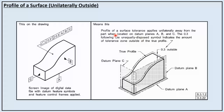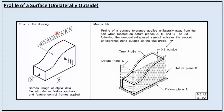Coming to profile of a surface unilaterally outside: in this example the feature control frame shows profile of a surface with a geometrical tolerance of 0.3, which is unilaterally outside, with 0.3 with respect to datum planes A, B, and C. This means the profile of a surface tolerance applies unilaterally away from the part. The 0.3 following the unequally disposed symbol indicates the amount of tolerance zone outside of the true profile. This is one of the additions made in ASME Y14.5-2009.